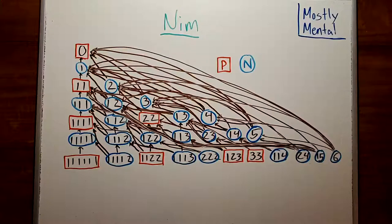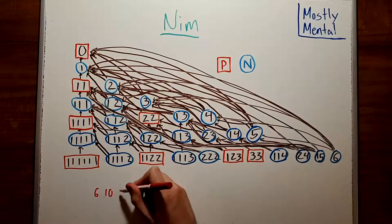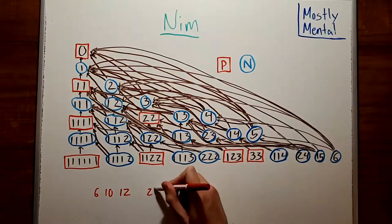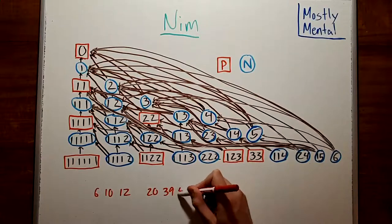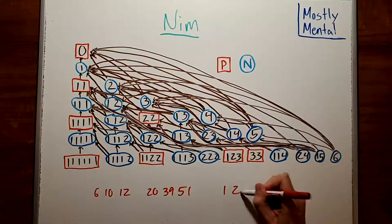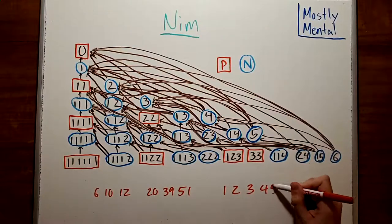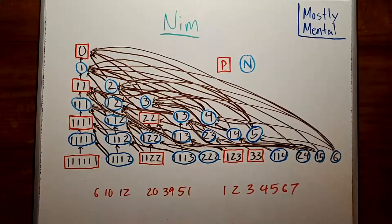So at this point, we might ask a programmer friend to code up the process for us. That lets us evaluate a whole lot of positions quickly. And we get P positions like 6, 10, 12, or 20, 39, 51, or 1, 2, 3, 4, 5, 6, 7. And at this point, our programmer friend might say, Hey, those look familiar. Have you considered Bitwise XOR?